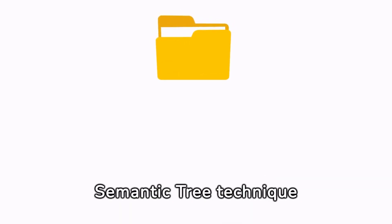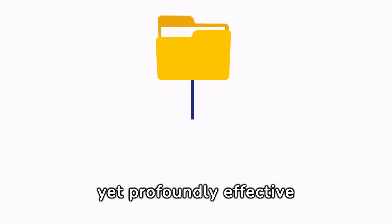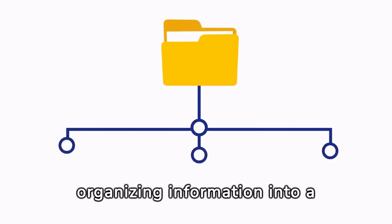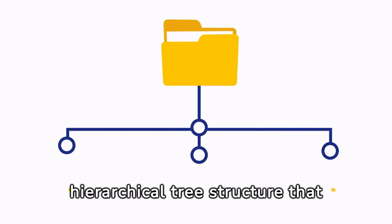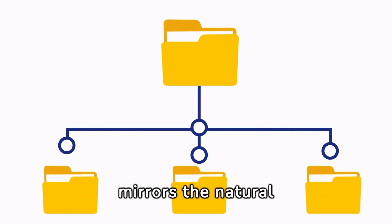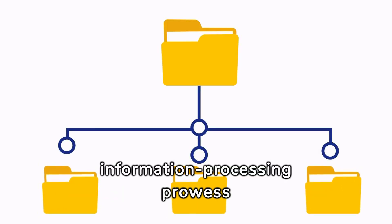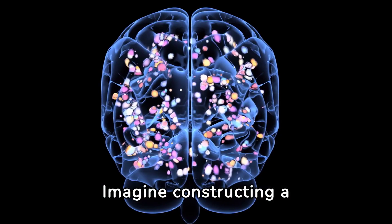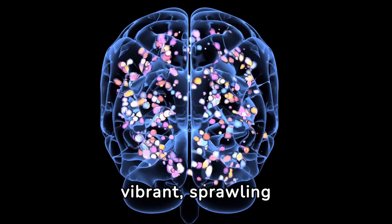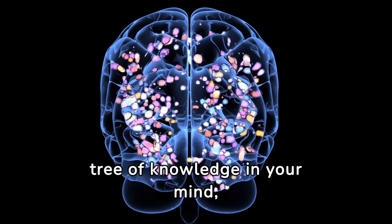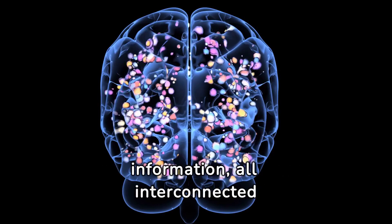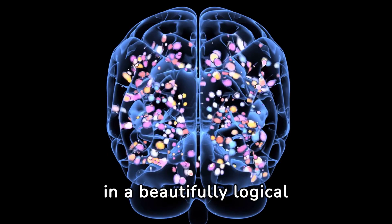At the heart of the Semantic Tree Technique lies a brilliantly simple yet profoundly effective concept: organizing information into a dynamic hierarchical tree structure that mirrors the natural information processing prowess of our magnificent brains. Imagine constructing a vibrant, sprawling tree of knowledge in your mind, where each branch represents a different chunk of information, all interconnected in a beautifully logical manner.